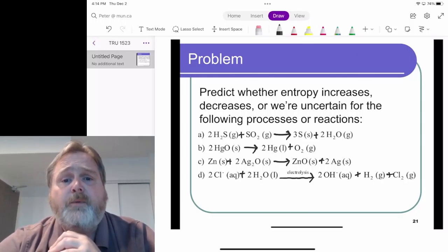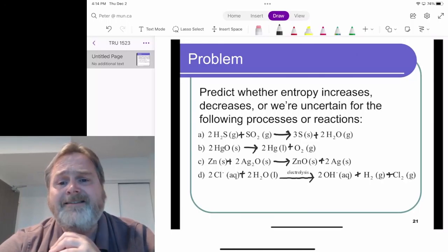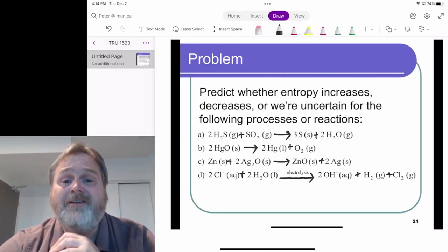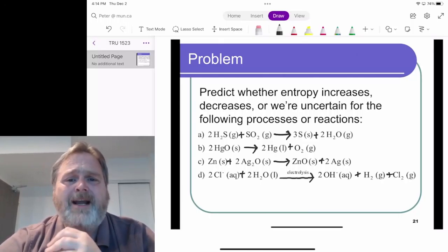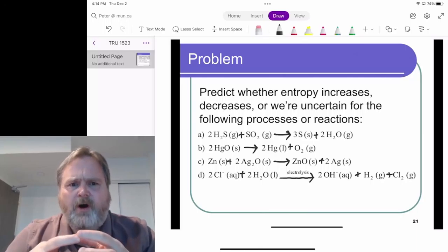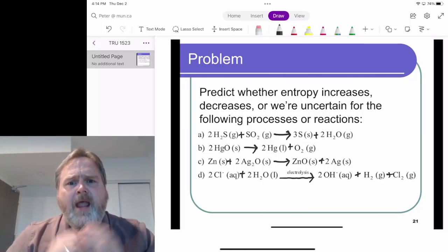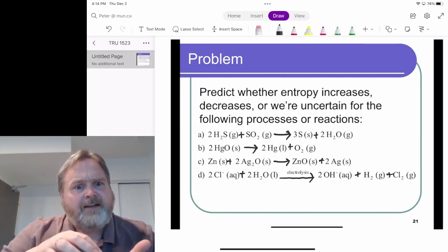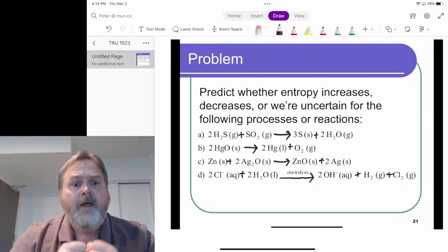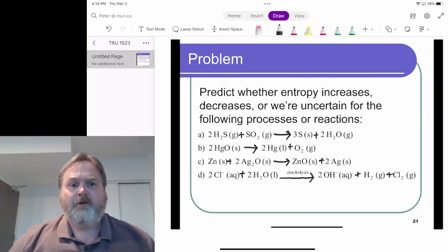For D, where we're taking two chloride ions in aqueous solution and two liquid water, and it's undergoing electrolysis to give us two hydroxide ions in aqueous solution, and then some hydrogen and chlorine gas, that's that same idea that we've got some liquid water here with stuff floating around in it. And something happens, and we've got some different stuff floating around in the water.